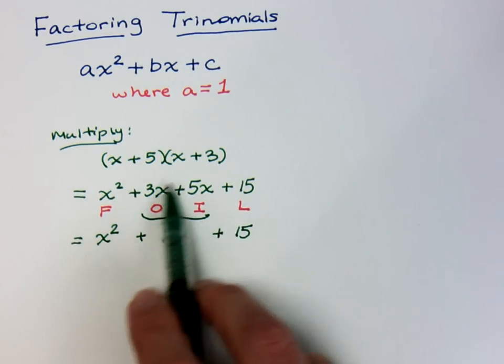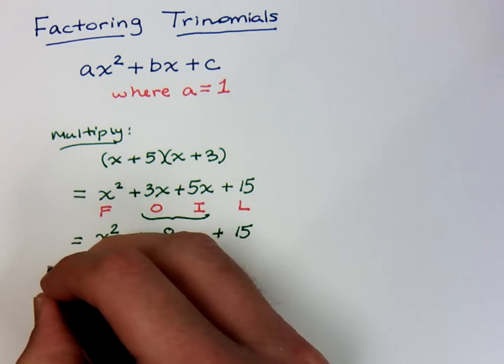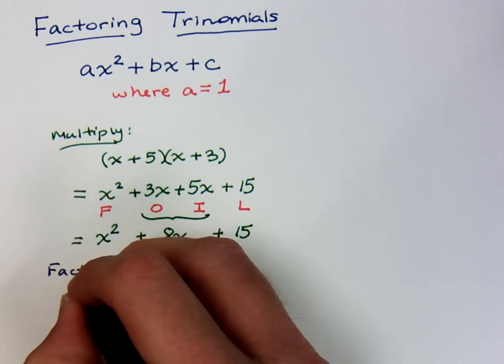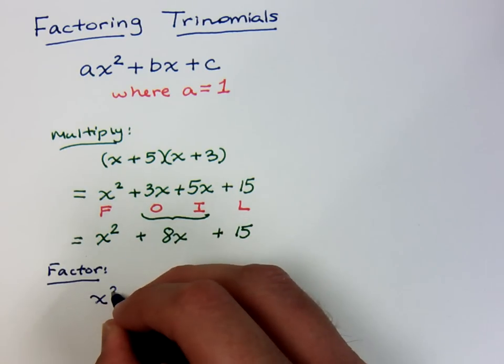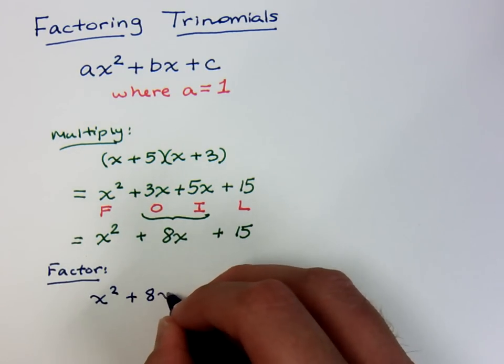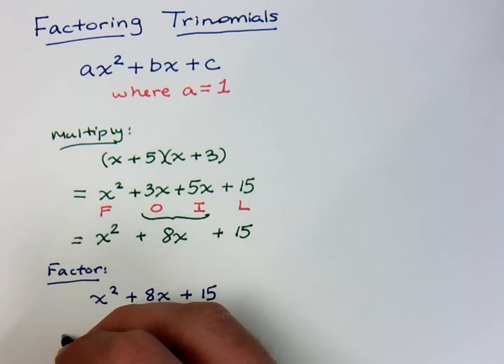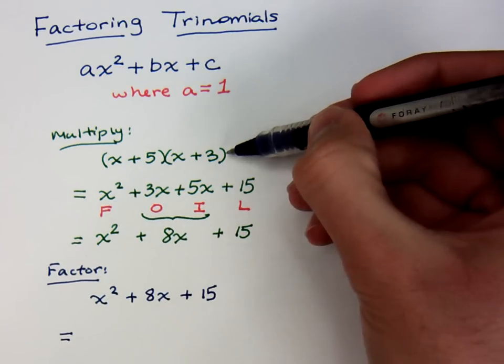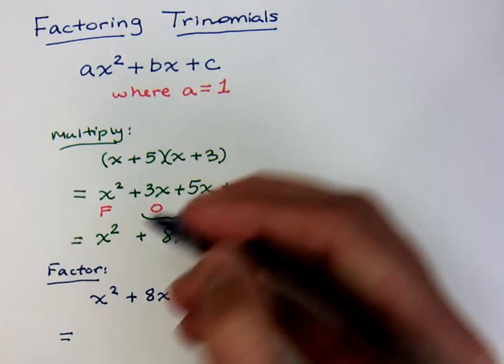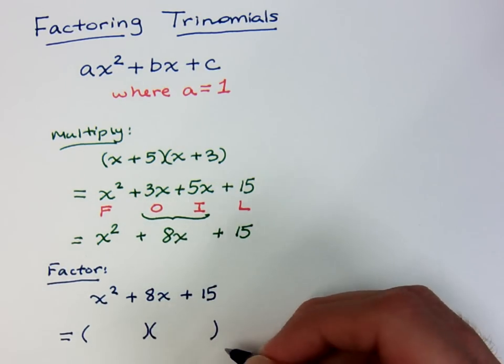Now if we understand what happens when we multiply, then I hope we can see what happens whenever we factor, when we go backwards. If I ask you to factor, let's start with x squared plus 8x plus 15. Let's see, how do we go backwards? What's the thought process? We understand that with most trinomials, it came from multiplying 2 binomials like I see up here. So I expect this guy to factor as the product of 2 binomials.